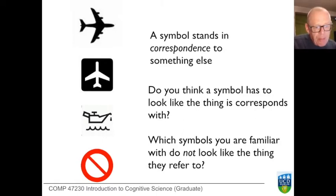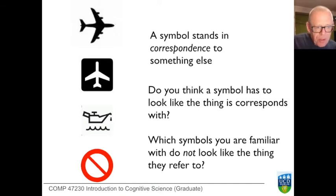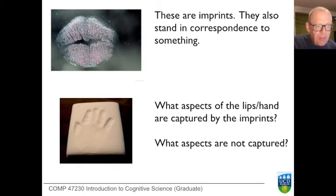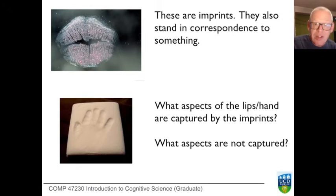So these symbols are all about something — the state of your car, the airports on the ground, how to behave. Here are two more things that are about something and are interestingly different. On the top we see the trace left behind by lips that kissed a glass, and below we see the imprint of a hand on soft clay. These are imprints — they stand in correspondence to something that is no longer there. There was an event which left a trace; the event is now long past, but we can find out about this absent thing by examining the trace. To this extent they might be seen to be very similar to representations, but they arise causally.